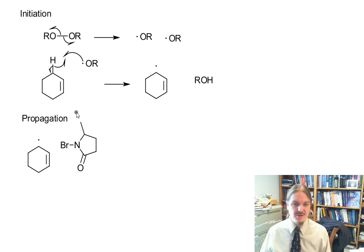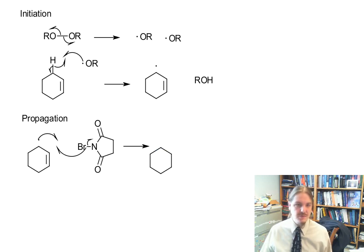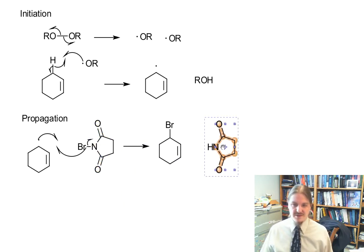Now that we have our carbon radical, our first propagation step involves abstraction. So now we have our cyclohexene, bromine. So here's our product. And the other thing that has formed is the succinamide radical.